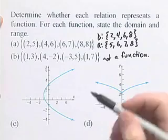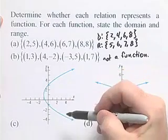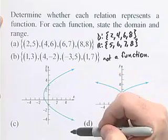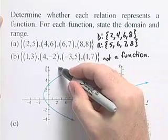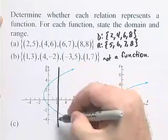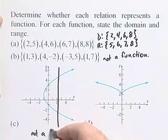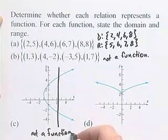We move on to part C. Here we're given a graph of a relation. To determine whether this is the graph of a function, we use the vertical line test. Since we can pass this graph with a vertical line and hit it in more than one place, this is not a function because it fails the vertical line test.